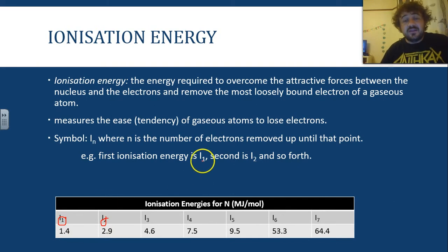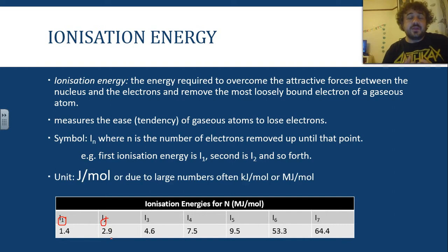So, the first ionization energy is I1, and that's because at that energy there, one electron is removed. N2, and N3, and N4, so this is nitrogen, which has seven electrons, and there we go, up to seven. Now, the unit is joules per mole, but because it's often quite a large number, we'll deal with kilojoules per mole, or megajoules per mole.